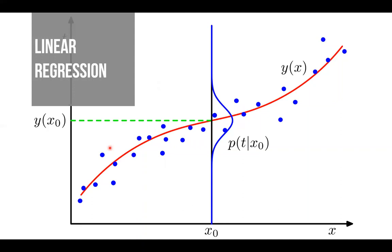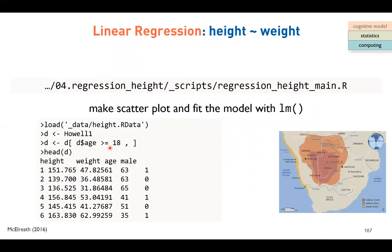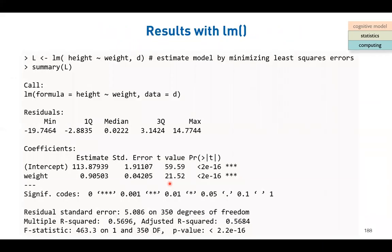We will extend the STAN model from a one-parameter case to a multiple-parameter case. In the binomial function there is only one unknown parameter, theta, but in regression there are at least two or three parameters. There is real data from the Statistical Rethinking book, coming from South Africa, containing a height variable, weight variable, age, and gender. We might be interested in the relationship between height and weight.